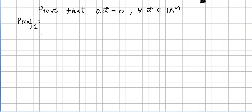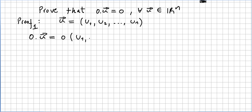Let us use the same method as before. What is 0 times u? That will be 0 times the vector with components u1, u2, up to u_n. According to the definition of scalar multiplication, this will be 0 times u1, 0 times u2, up to 0 times u_n.